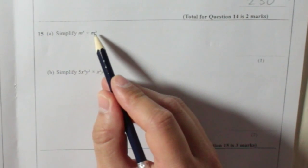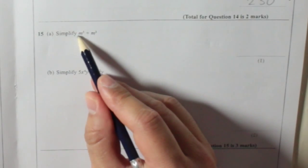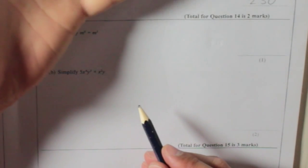Now remember, with powers, when you divide you subtract, because that means m times m times m times m times m, divided by m, divided by m, divided by m.